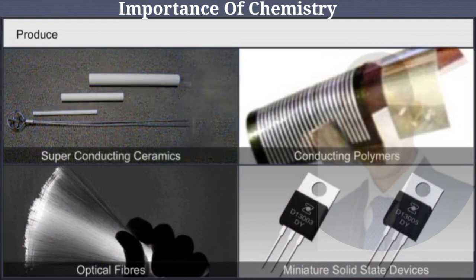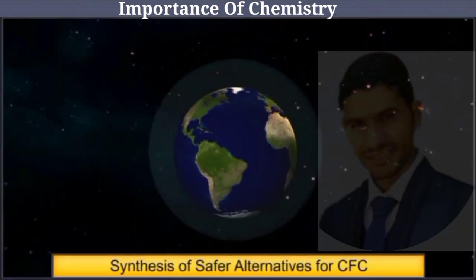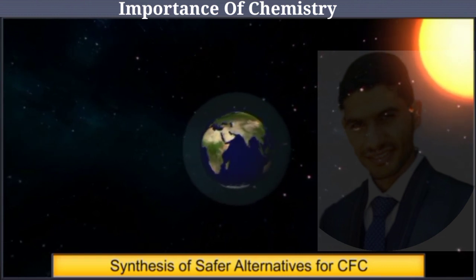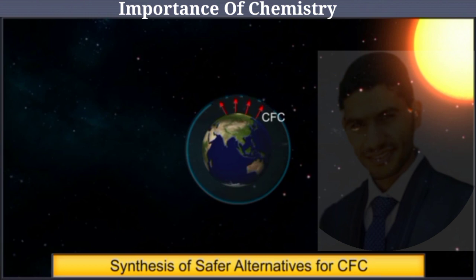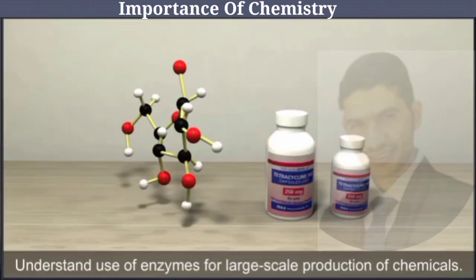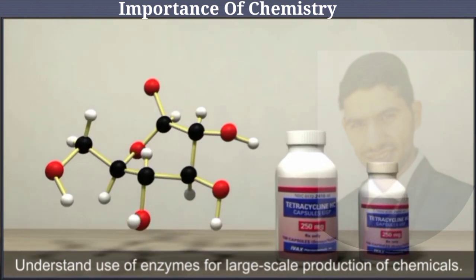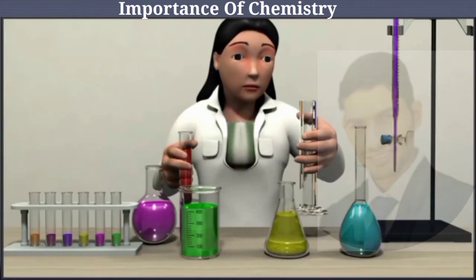With knowledge of chemistry, we can produce superconducting ceramics, conducting polymers, optical fibers, and miniature solid-state devices like silicon chips. We have also synthesized safer alternatives for CFCs, which destroyed our ozone layer — CFCs were used as refrigerants but destroy ozone when they enter the stratosphere. We have also understood the use of enzymes for large-scale production of chemicals.